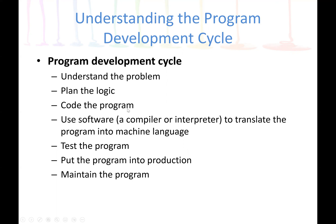Then next, we code the program. This is the implementation. Here we write the source file. Then we need a compiler or interpreter to translate the program into machine language, because computers don't understand English — only the binary form of language, which we call machine language: zeros and ones.